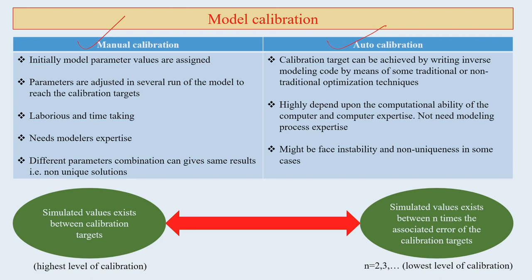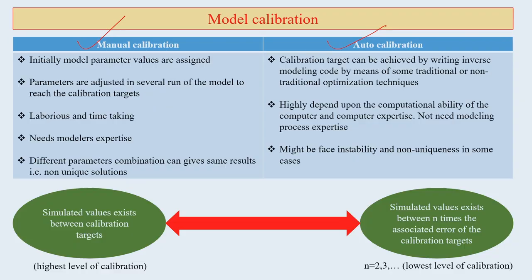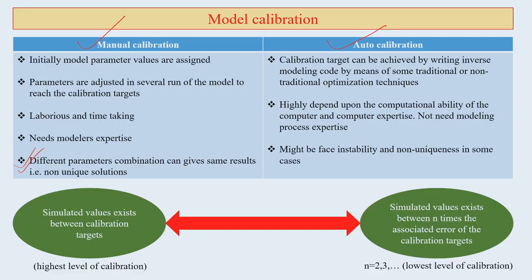A lot of time is spent calibrating a model, and if calibration is not good, the model outcome will not be of quality. It requires experience and expertise. Different parameter combinations — such as rainfall, humidity, temperature, and wind speed together — can give the same result, which is a non-unique solution.